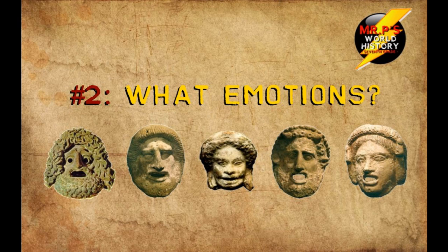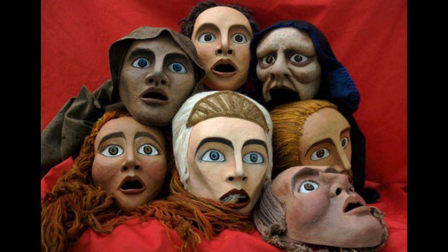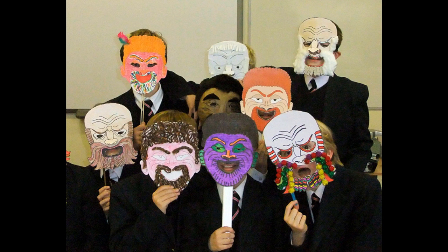Number two. Next, decide what emotion you want your mask to convey. You should choose a simple but clear expression to represent. You may decide to make a mask that is happy, sad, angry, or excited. If you're making the mask for a particular play, think about your character and the primary emotions they feel during the play. Remember that you will be poking out eye holes, so make sure your design has large, open eyes.